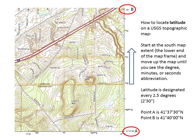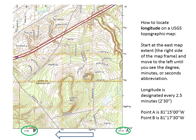You may locate latitude and longitude lines along the edge of the map frame of any USGS topographic map. In the case of the 7.5-minute series, start at the south map extent — the lower end of the map frame — and move up until you see the degree, minutes, or seconds abbreviation. Latitude is designated every 2.5 minutes. For longitude, start at the eastern edge and move to the left until you see the abbreviation. Longitude is also designated every 2.5 minutes. So point A, circled in green at the bottom of the screen, is at 81 degrees, 15 minutes, 0 seconds west, and point B is at 81 degrees, 17 minutes, 30 seconds west — a difference of 2.5 minutes.